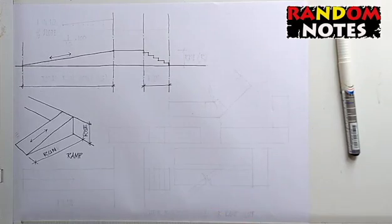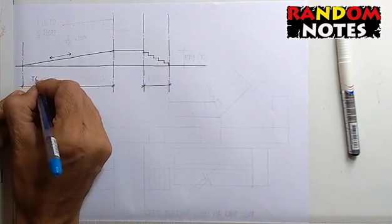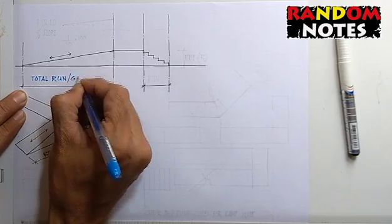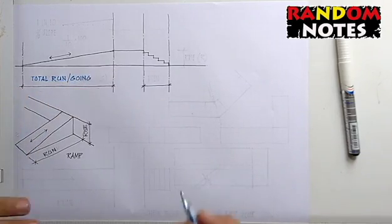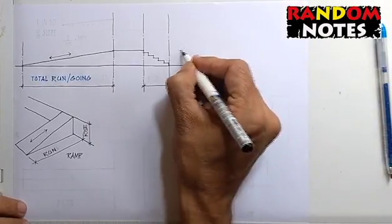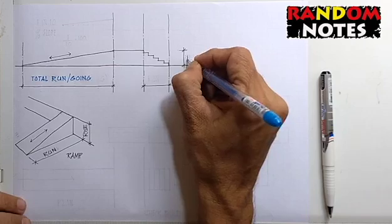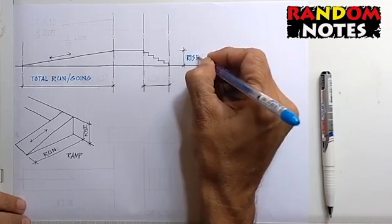But before that, let us understand one more aspect. This is the total run of the ramp. This is also called going. And this is the rise of the ramp. We denote rise as R and we denote run as G.